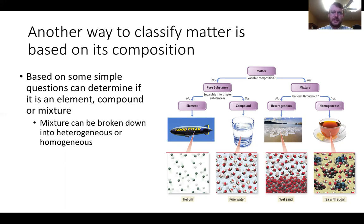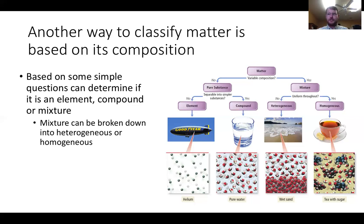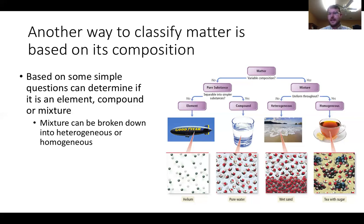There are two types of mixtures: homogeneous and heterogeneous. A homogeneous mixture has the same composition throughout — like hot tea, which is uniformly water and tea molecules all the way through. A heterogeneous mixture does not have uniform composition. A pepperoni pizza is a great example — one slice might have four pepperonis, another just one. The distribution is uneven, so it's heterogeneous.